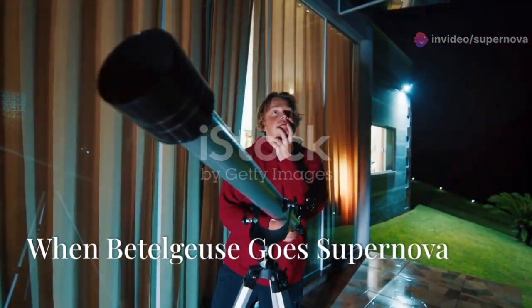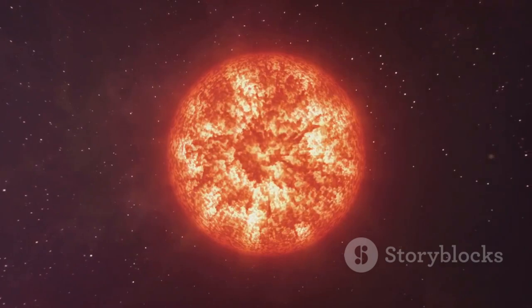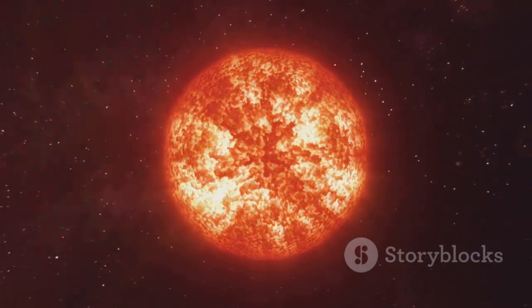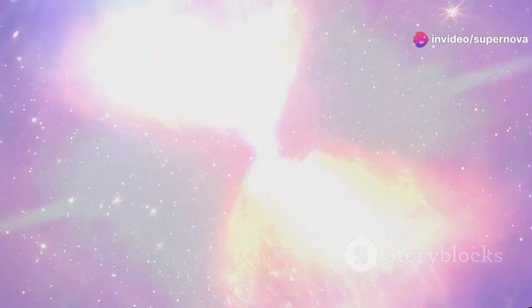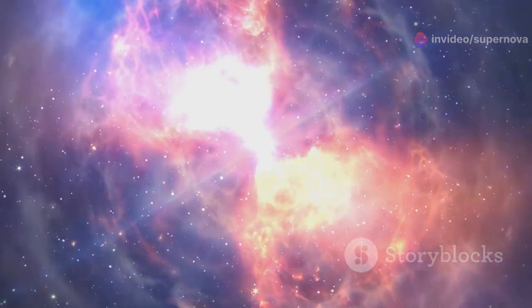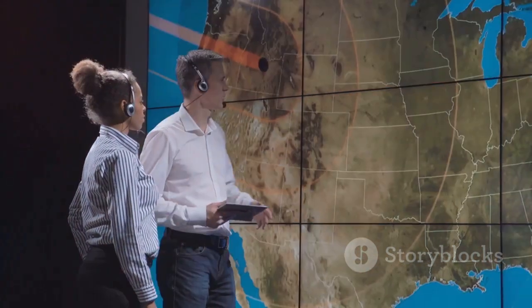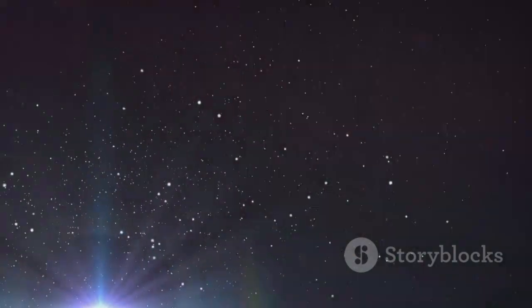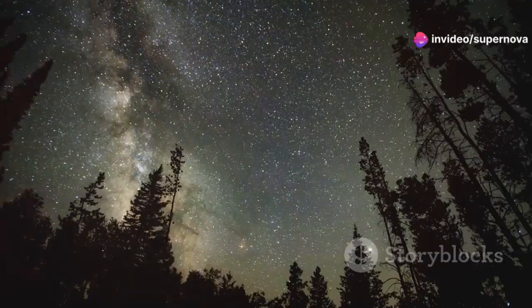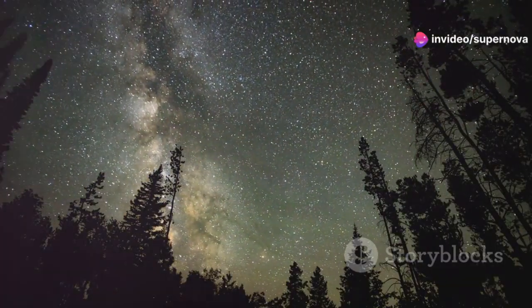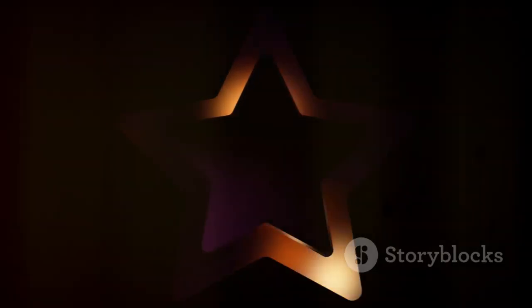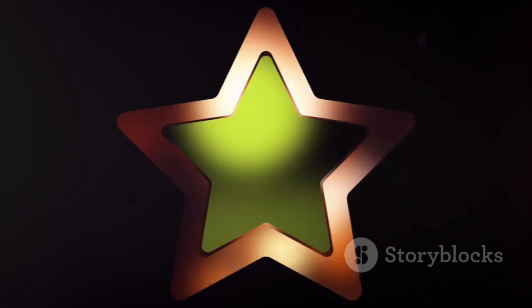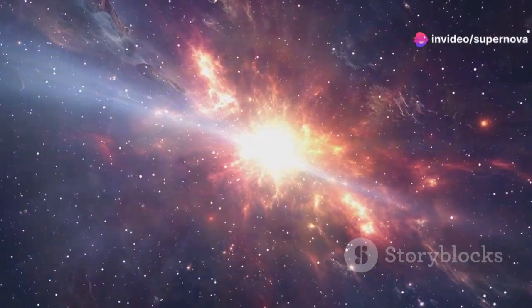Betelgeuse is living on borrowed time. Its core is running out of fuel, and the inevitable pull of gravity will soon take over. When this happens, the star's core will collapse in on itself, triggering a supernova explosion, one of the most energetic events in the universe. While astronomers can't predict the exact timing, Betelgeuse is expected to go supernova within the next 100,000 years. This timeframe is a blink of an eye on cosmic scales, but it could happen tomorrow or thousands of years from now. The uncertainty lies in the complex processes occurring within the star's core, which are hidden from our direct view. However, we can be certain that when Betelgeuse does explode, it will be a spectacle unlike any other.